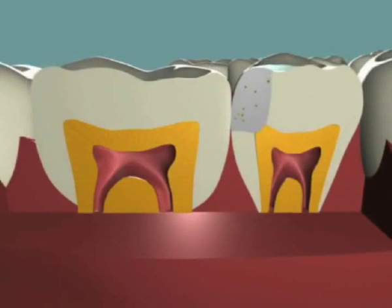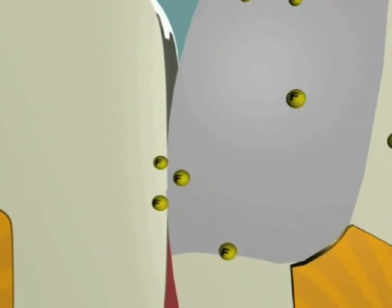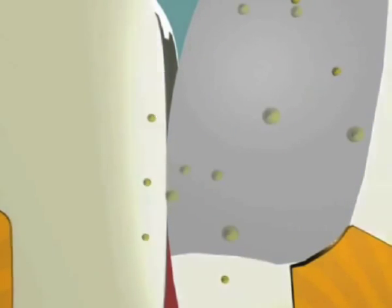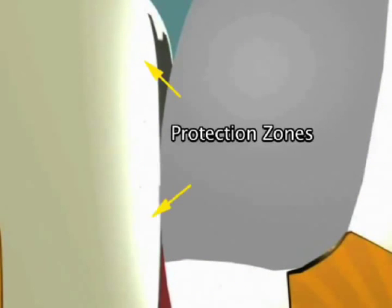Tooth surfaces surrounding or adjacent to the glass ionomer cement benefit from an initial burst of fluoride. This creates a peripheral zone containing increased levels of fluoroapatite. Glass ionomer cements, therefore, create zones of protection for surrounding tooth surfaces.